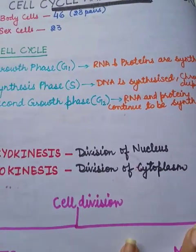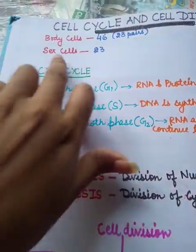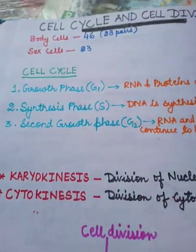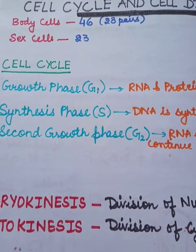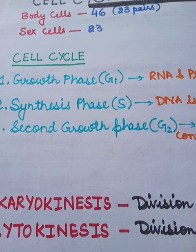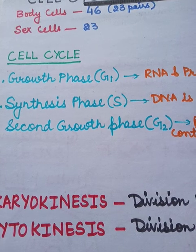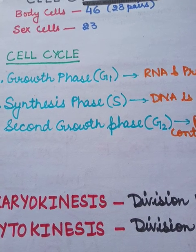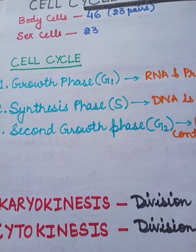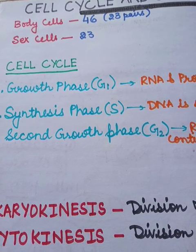You have learned in the lower classes that body cells contain 46 chromosomes, which is 23 in pairs, and sex cells or reproductive cells contain 23 chromosomes. 23 come from the sperm and another 23 come from the egg, which fertilize to form a new baby having 46 chromosomes.